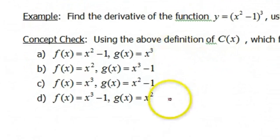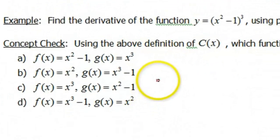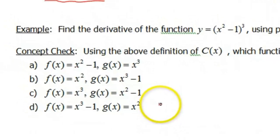So I have four options here. One where f(x) = x² - 1, g(x) = x³. Another one where those are switched around a little bit. f(x) = x², g(x) = x³ - 1. c, f(x) = x³, g(x) = x² - 1. Or d, f(x) = x³ - 1 and g(x) = x². So pause the video for just a second, and then come back with your choice.